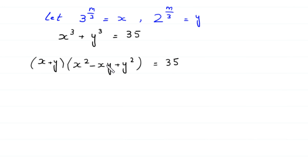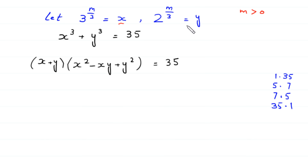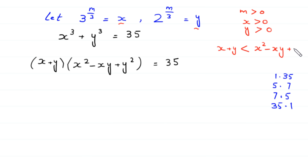We have two factors on the left side, and 35 can be factorized as 1×35, 5×7, 7×5, and 35×1. Because m is greater than 0, both x and y are greater than 0, which means (x + y) is less than (x² - xy + y²). So the pairs 7×5 and 35×1 are rejected, leaving only cases 1×35 and 5×7.